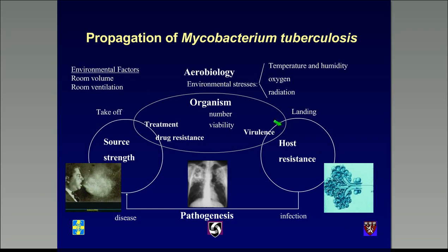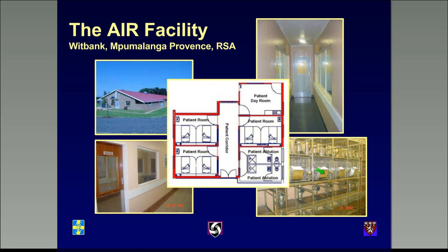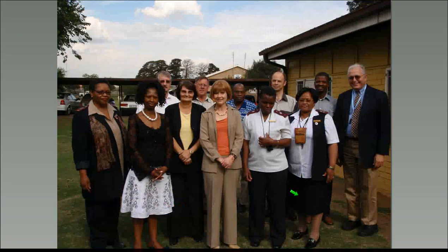In our model, real patients with MDR-TB are hospitalized, and all the air breathed by highly susceptible guinea pigs recreates the propagation cycle of tuberculosis, allowing us to study how this happens and what interventions might be helpful. Our facility in South Africa is a wing of an MDR treatment facility with three two-bed rooms, a nursing station, and a common room. All the air from this area is ventilated from the patient rooms to guinea pig chambers containing up to 360 guinea pigs. The first study we did was an environmental intervention — upper room germicidal UV.